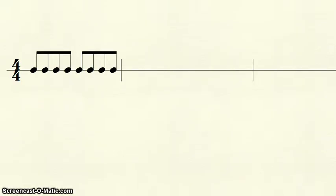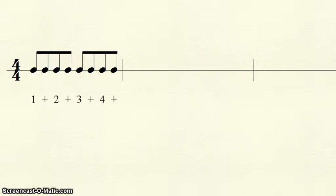Finally, eighth notes, which receive half of a beat. When dividing a beat in half, we say the word "and." This "and" is signified by a simple and symbol, which also looks like a plus. The "and" of the beat is always the second half of the beat. A measure of eighth notes in four-four would be counted as one and two and three and four and.